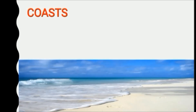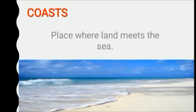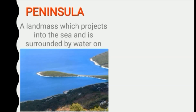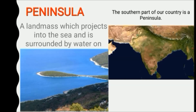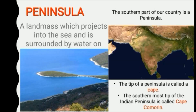The place where the land meets the sea is called a coast. A land mass which merges into the sea, and the land which is surrounded by water on three sides, is called a peninsula. The southern part of our country is a peninsula. The tip of the peninsula is called a cape, and the southernmost tip of the Indian Peninsula is called Cape Comorin.